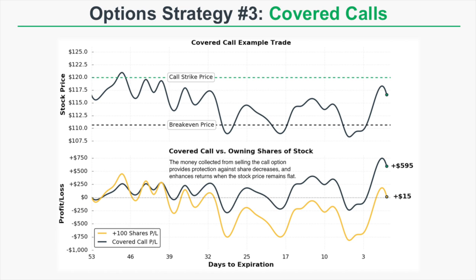On the other hand, this covered call position had a profit of $600 at the end of this period. That tells us that even though stock profits were only $15, there was an additional $580 in profits from selling the 120 call option. Since the stock price was below the call strike price of $120 at expiration, the investor who sold that call keeps all of the premium for selling it.